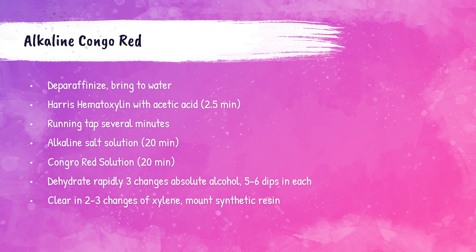The procedure for the alkaline Congo red stain is as follows. The tissue needs to be deparaffinized and brought to water. Then stain with Harris hematoxylin with acetic acid for two and a half minutes. After that, place the tissue section under running tap water for several minutes. Then apply alkaline salt solution for 20 minutes, followed by staining with Congo red solution for 20 minutes.